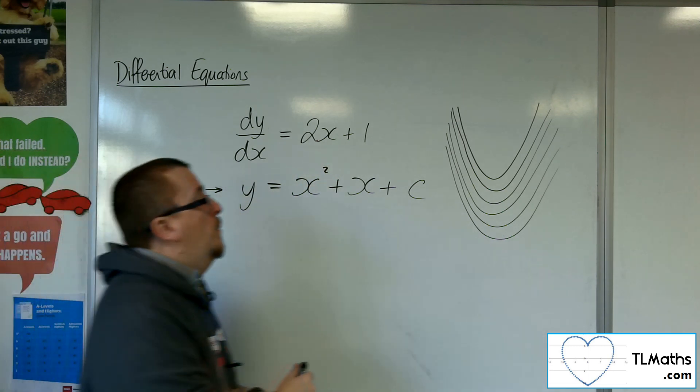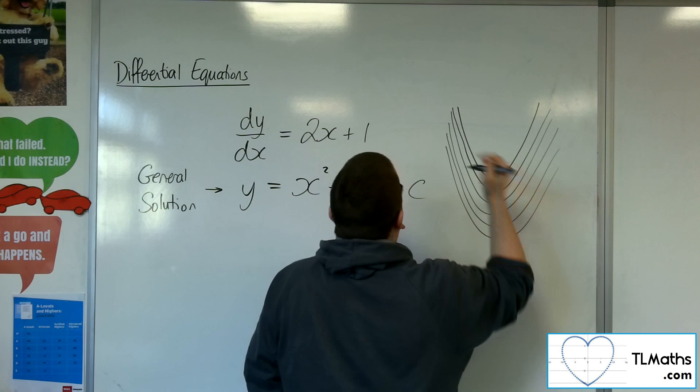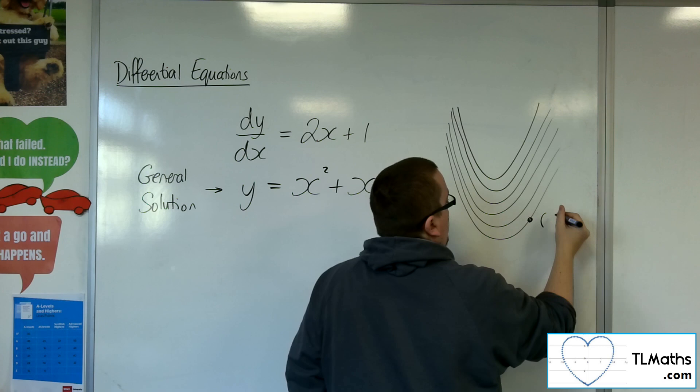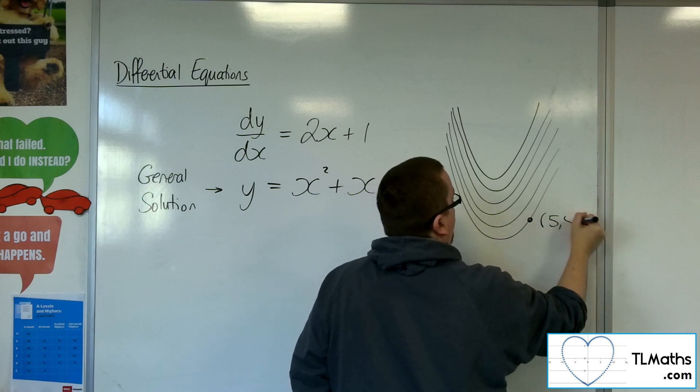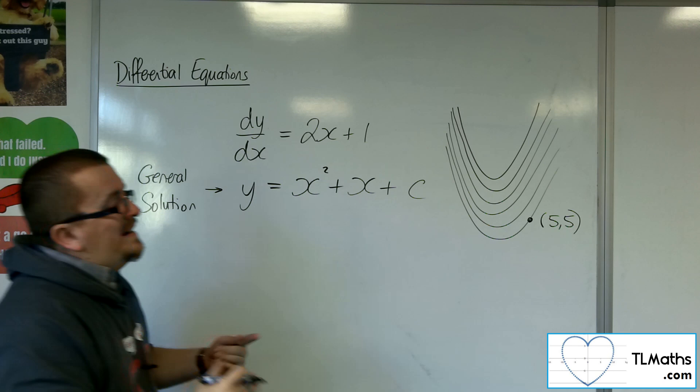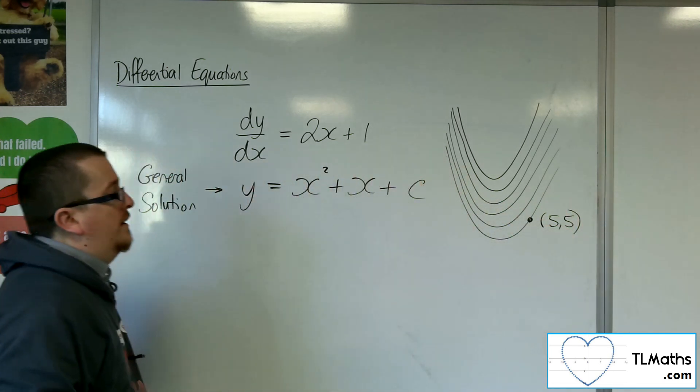But then you might say, well, I want the solution to this differential equation where the curve goes through a particular point. So let's say it goes through 5, 5, for example. So what that does is it picks out that particular curve.